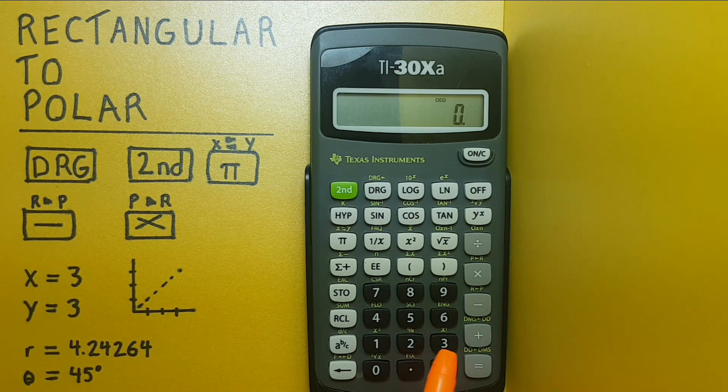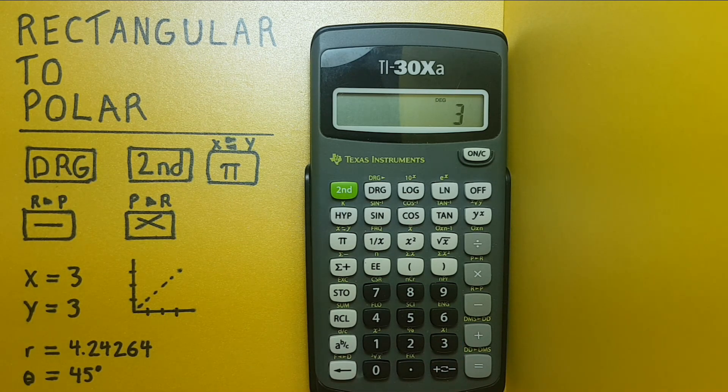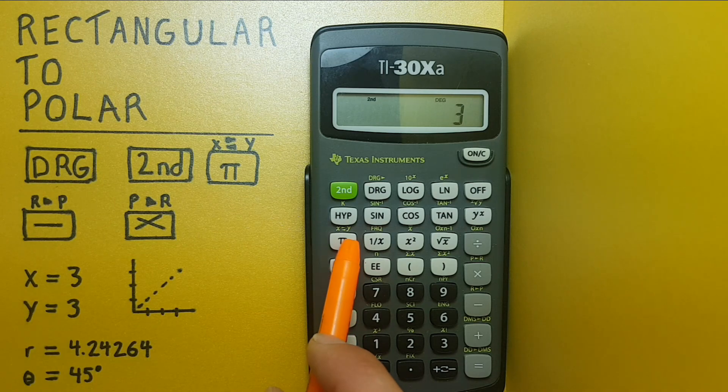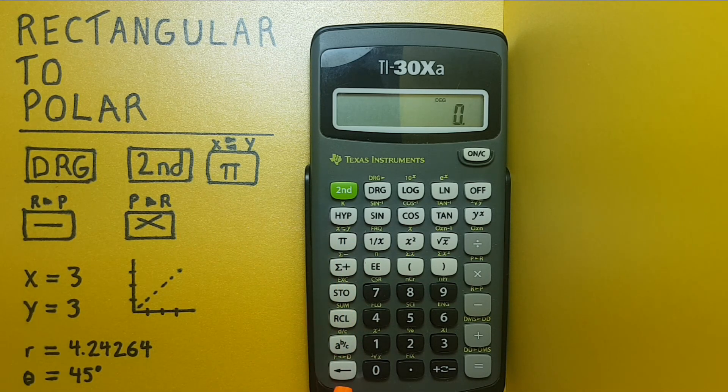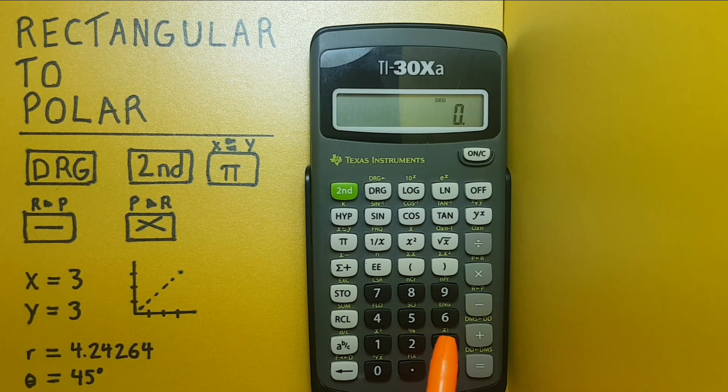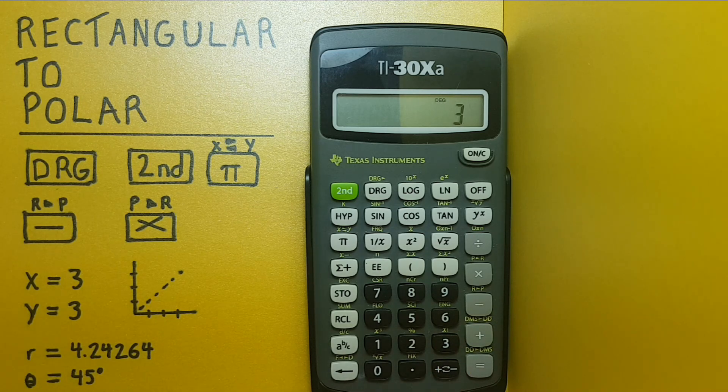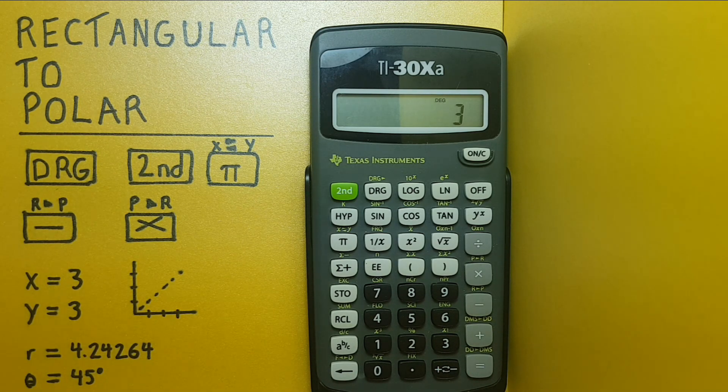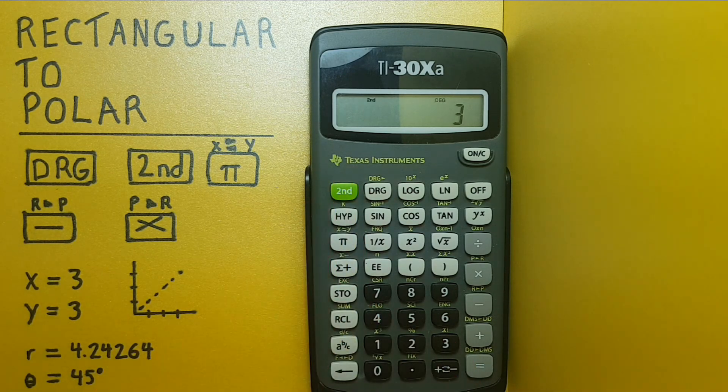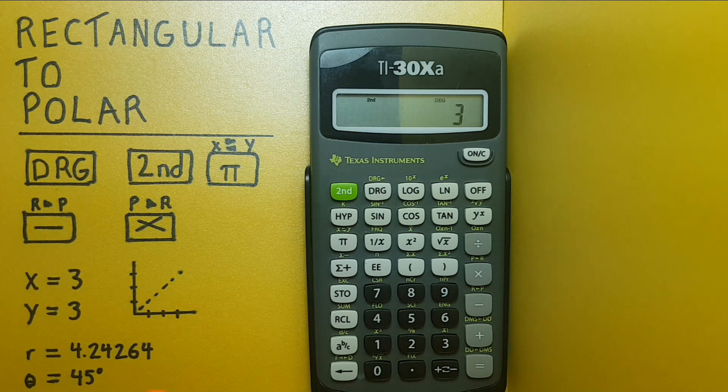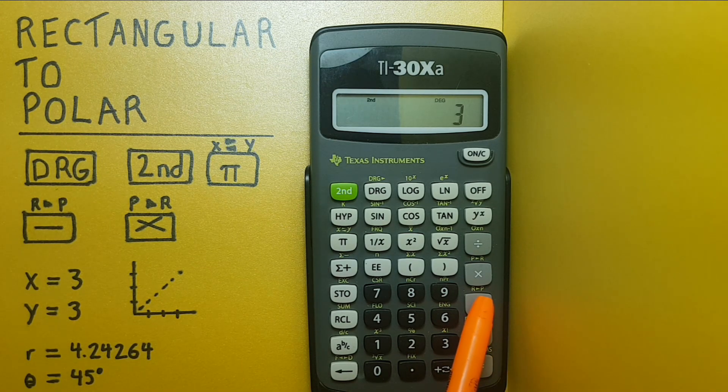To enter this we would enter our x value 3, then second function pi, and our second 3, which is our y value, and then we hit second function again, and we tell the calculator we're converting rectangular to polar, so the subtraction key.